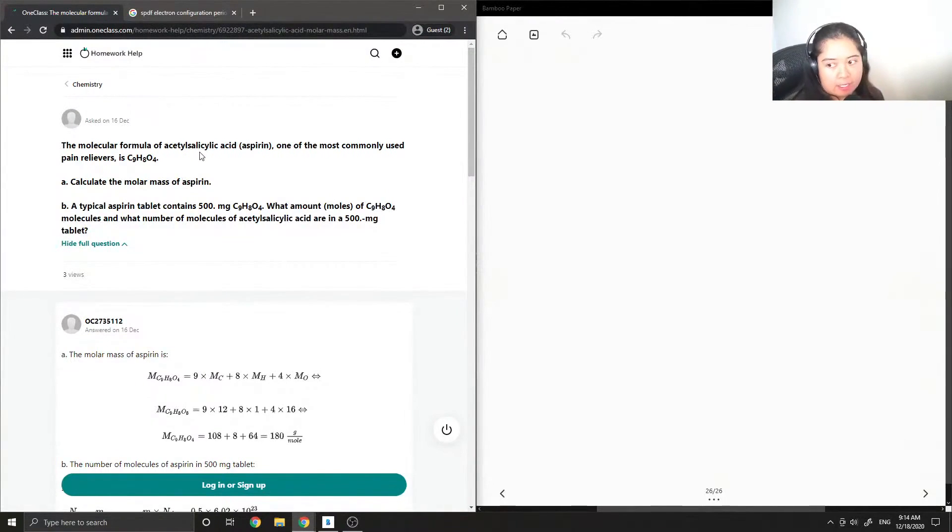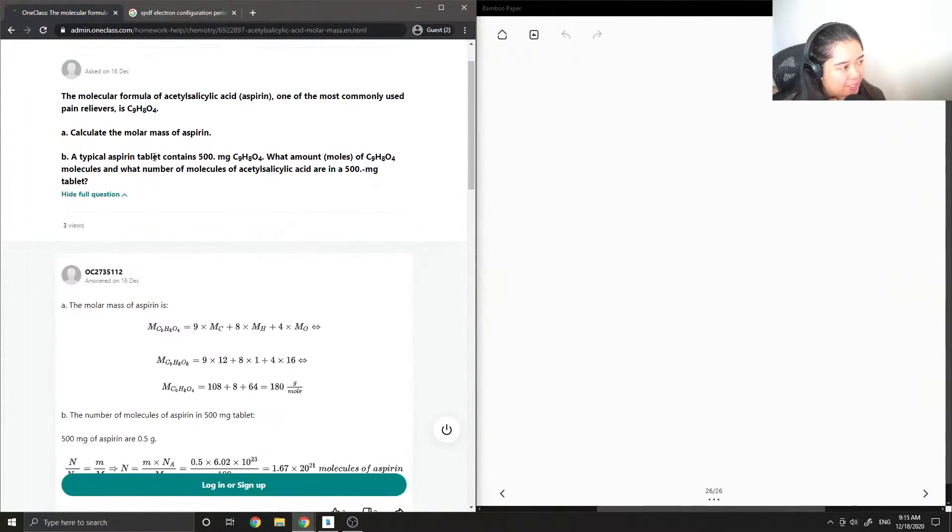It has a chemical formula of C9H8O4. Calculate the molar mass of aspirin. And part B just asks,